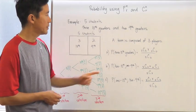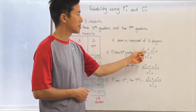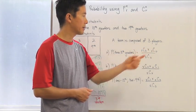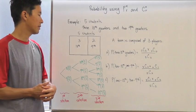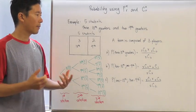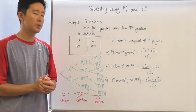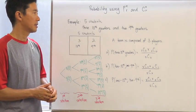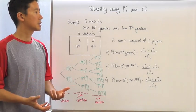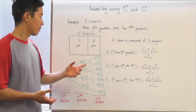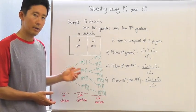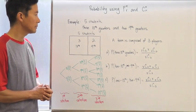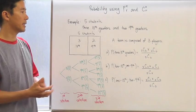So if I take C(3,3) times C(2,0), divided by C(5,3), I can come up with the probability of choosing three tenth graders to make up this team — without having to rely on the tree diagram.